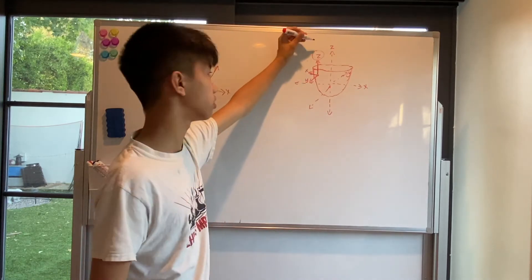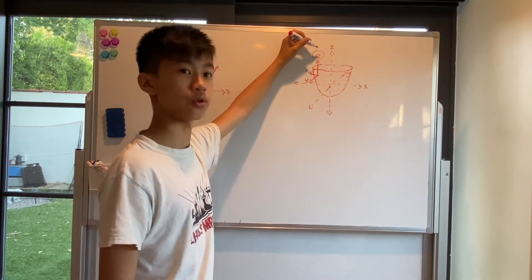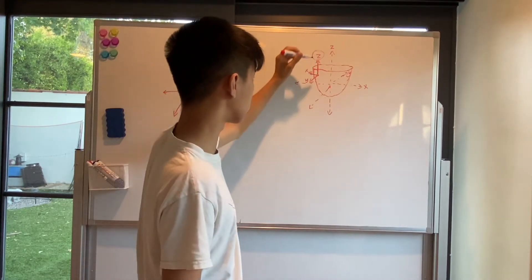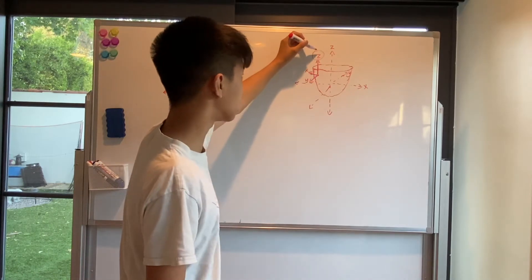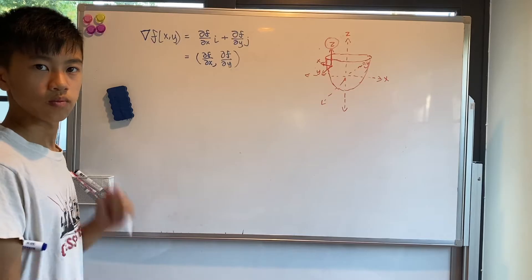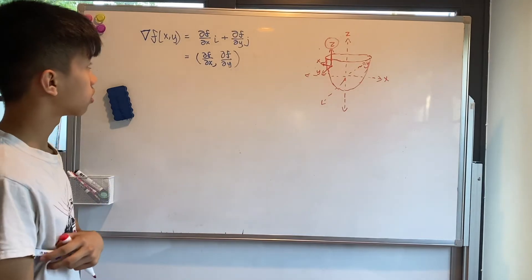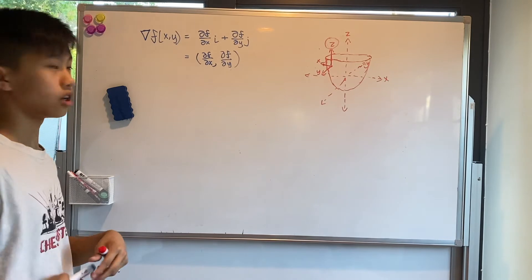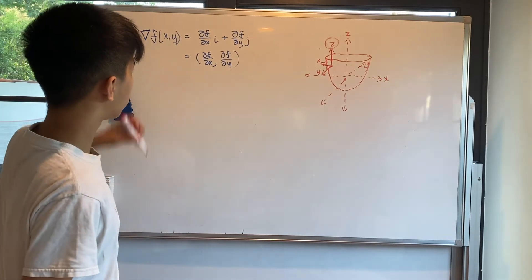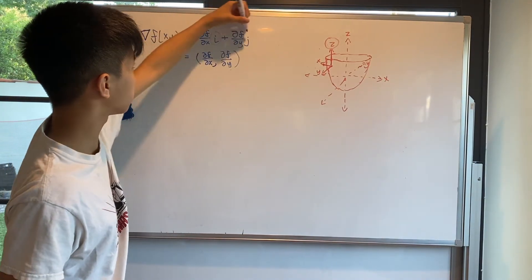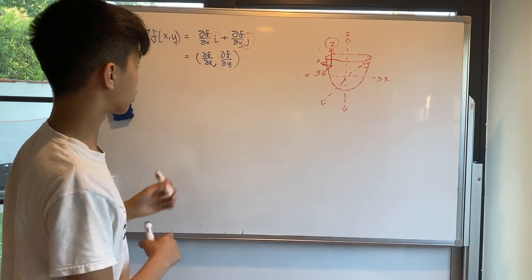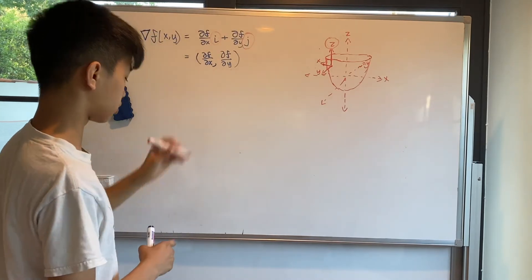Well, a gradient is a vector that describes the slope of z at a certain point. And as vectors usually are, they're denoted in this i plus j form, or in parentheses like this.